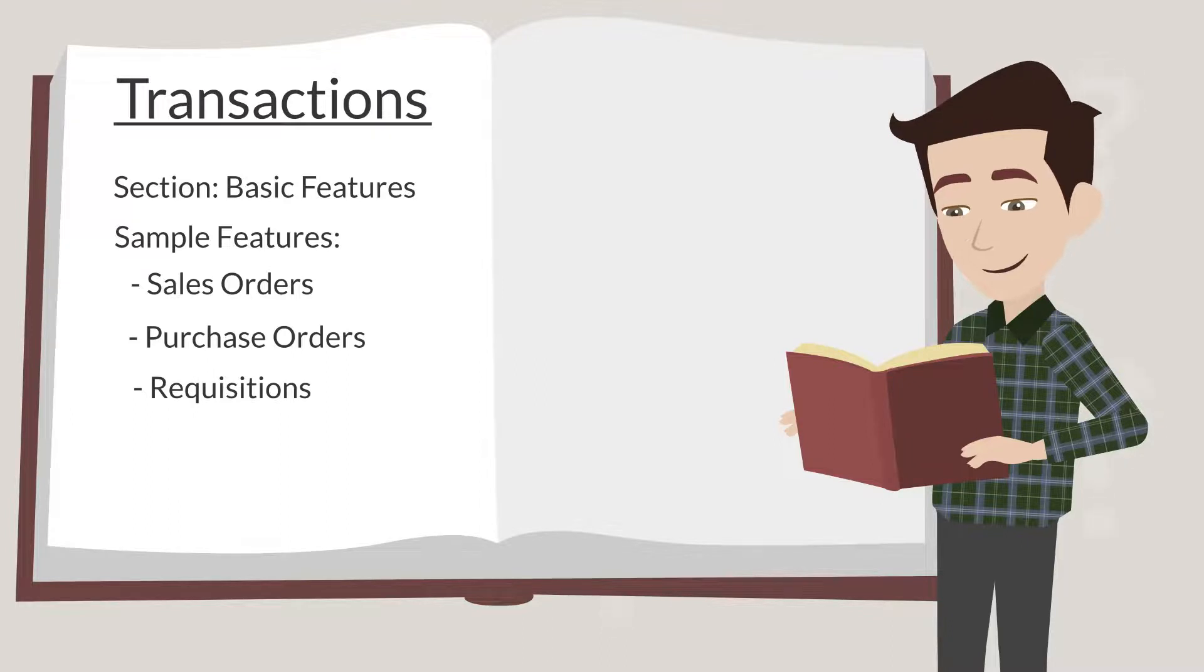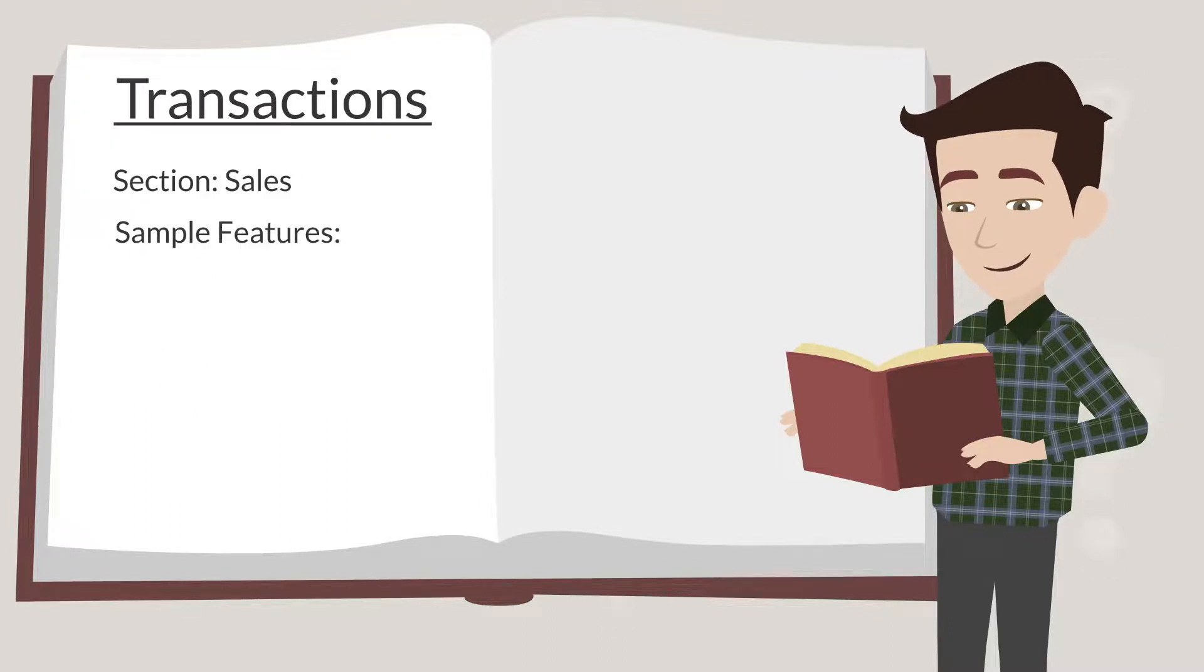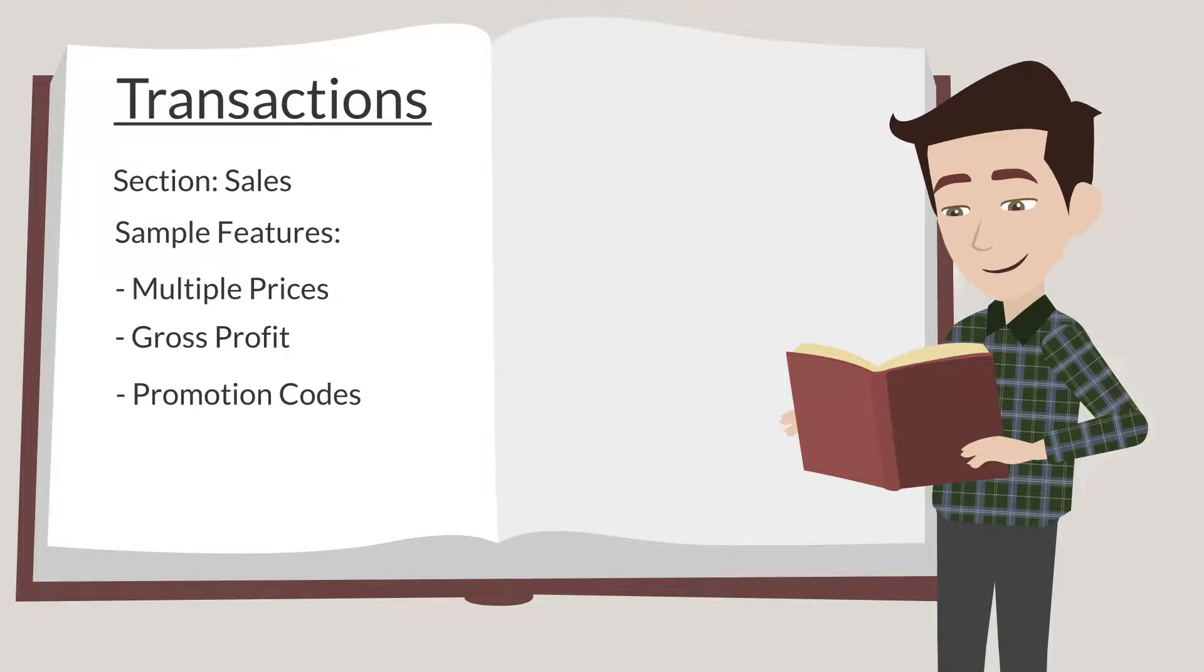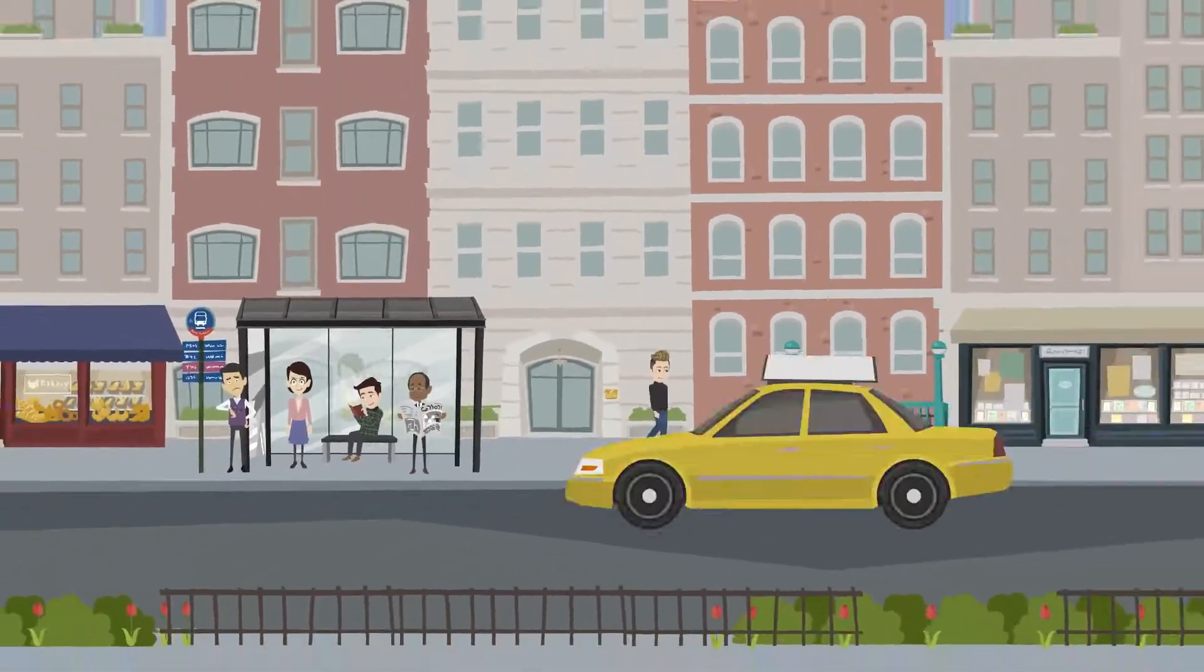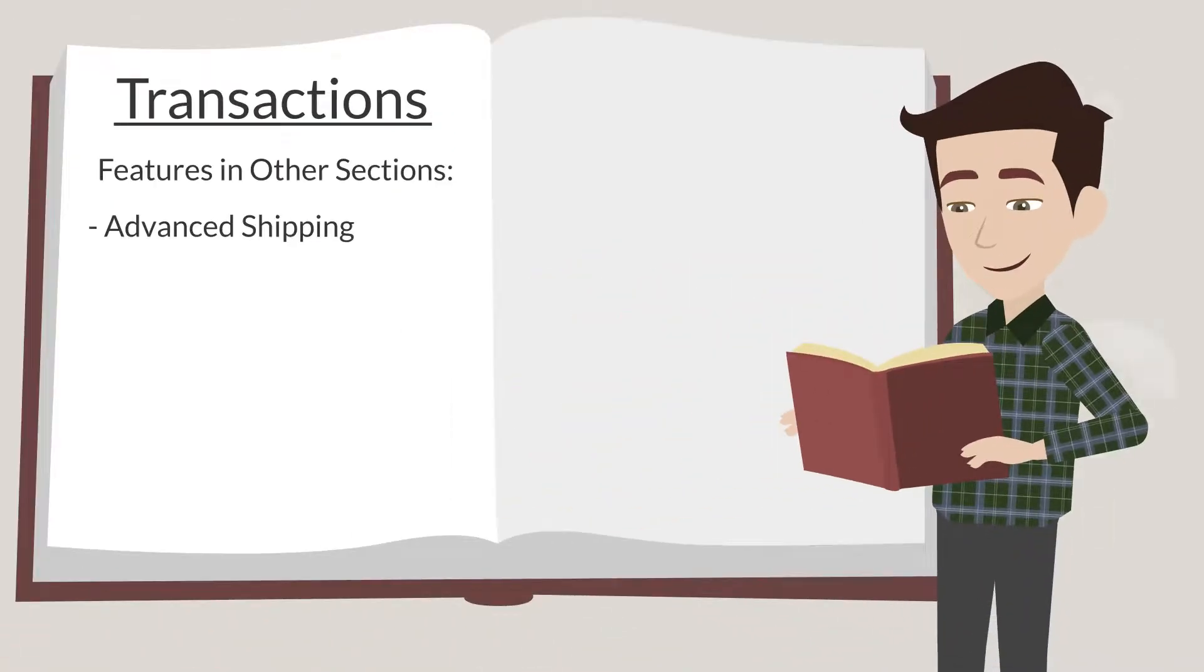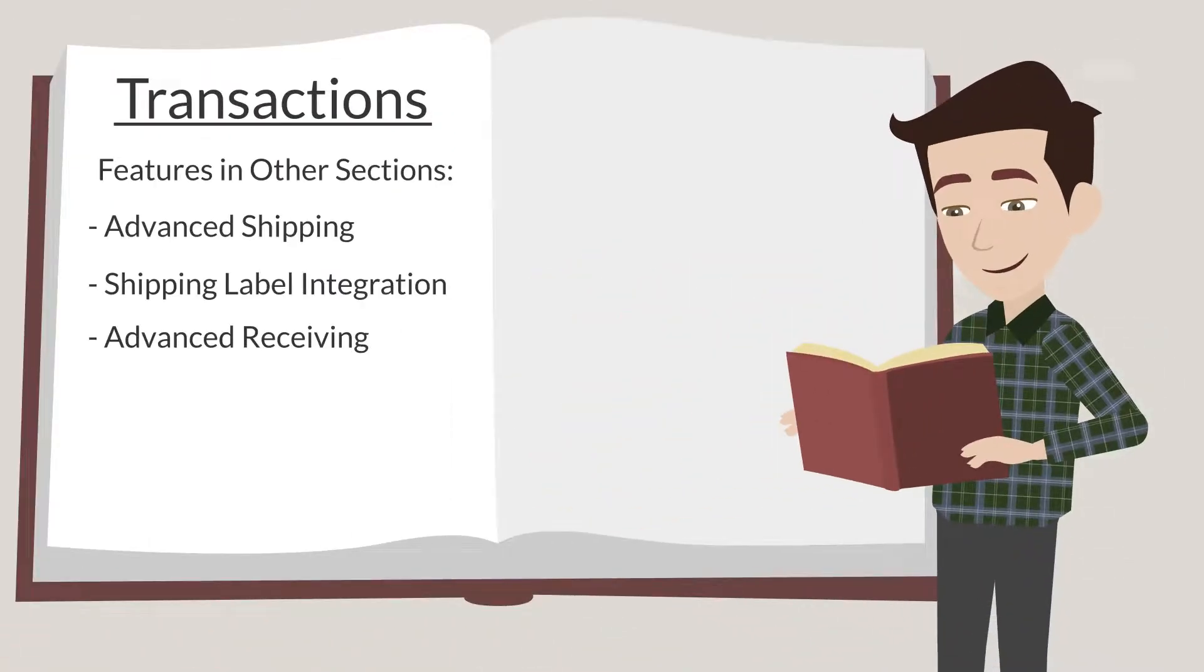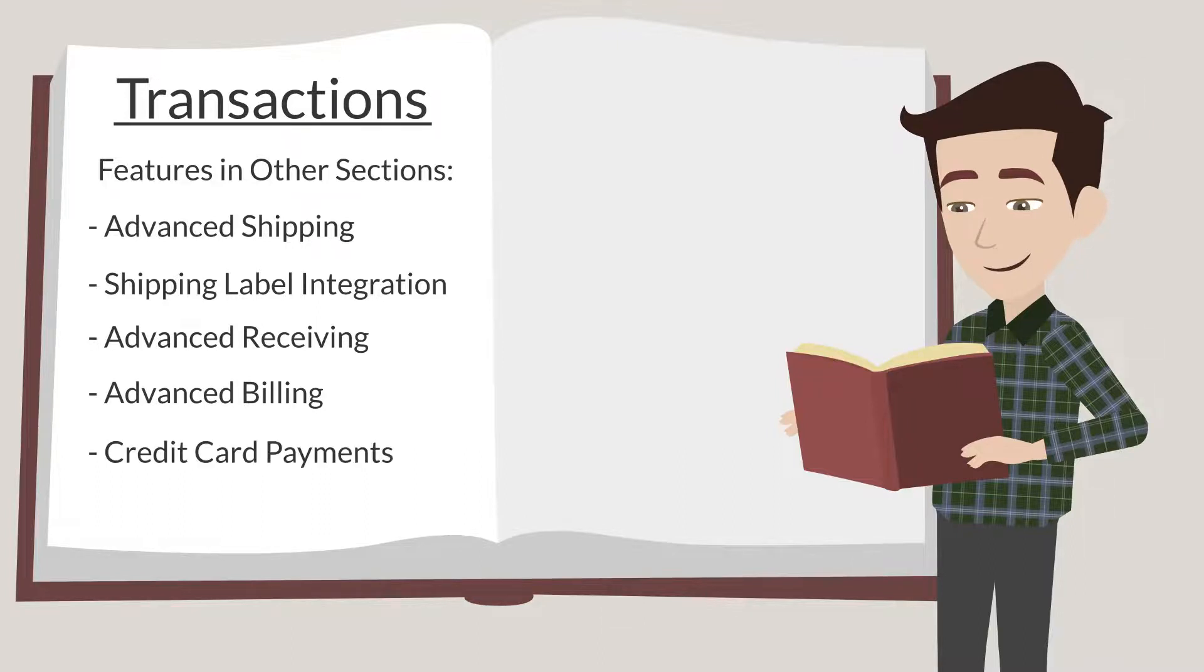Sales includes things like multiple prices, supporting multiple prices for a single item, gross profit, tracking the gross profit on items, and promotion codes, enabling customers to use coupons. Some features in the other three sections include things like advanced shipping, shipping label integration, advanced receiving, advanced billing, credit card payments, and electronic funds transfer.